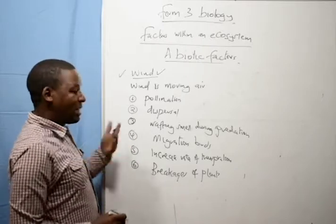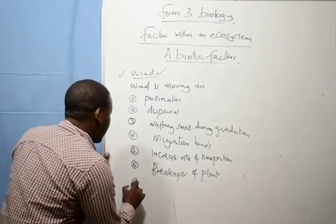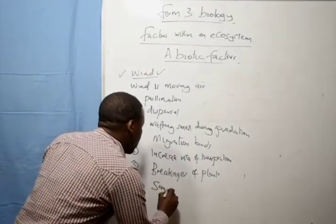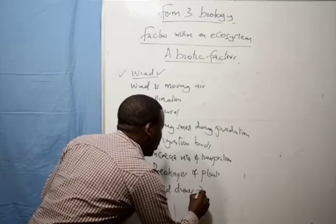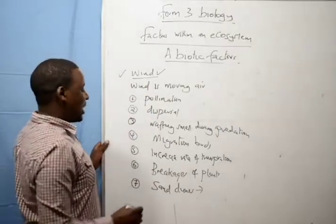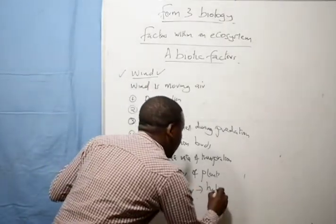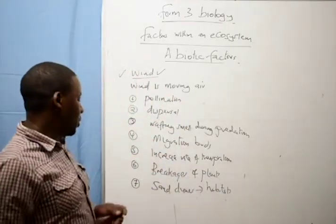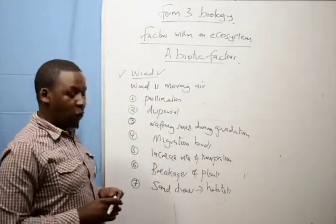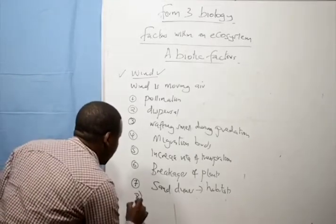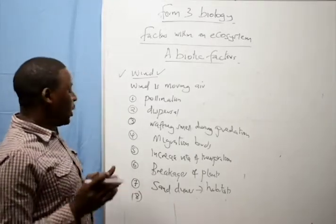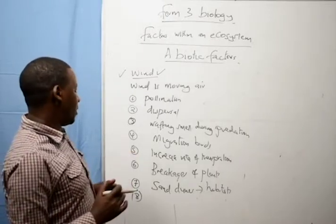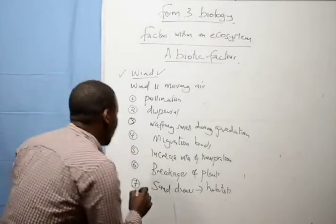Number seven, wind forms sand dunes, sand dunes in deserts which are habitats for organisms. In the desert there are those sand dunes which act as habitats for some organisms. And maybe the last one, when the wind blows it creates waves in the sea.